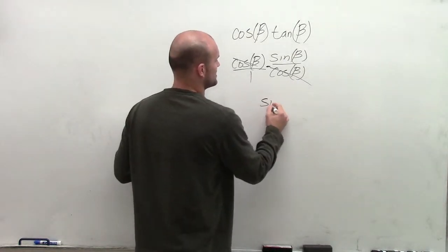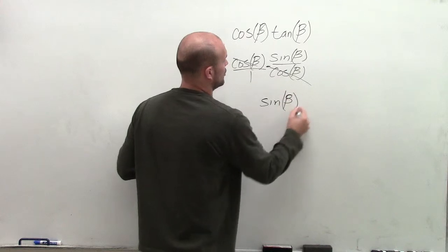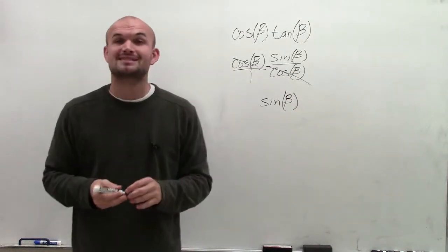So therefore, multiplying across, I get the sine of beta, which is now going to be my simplified expression.